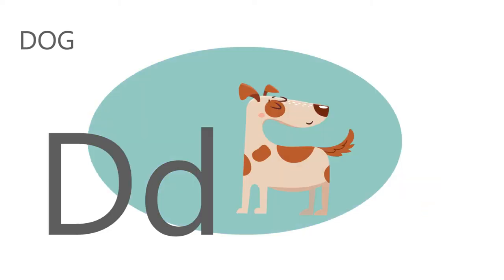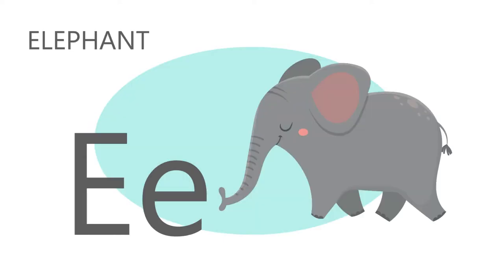D is for dog. D, d, dog. E is for elephant. E, e, elephant.